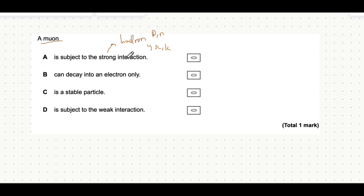A muon can decay into an electron only - you have to be very careful here because muons do decay into electrons most of the time, but it can also decay into other types of leptons. So the fact that it says only means that this is incorrect.